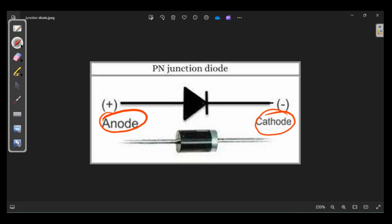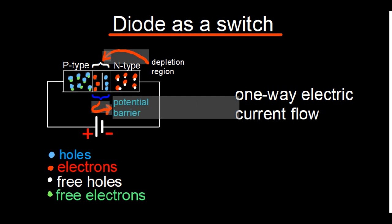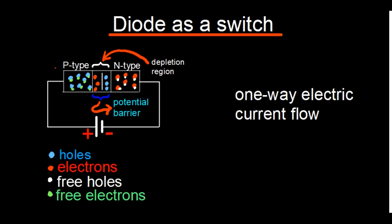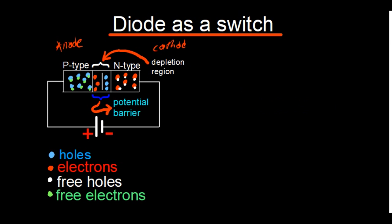One important thing about the diode is its working principle, which makes a lot of sense when we use this diagram. This positive side is where we have the P-type, and the other side is the N-type. It's more like we have the anode on one side and the cathode on the other. In the diagram, the blue ones are called holes, the big red dots are electrons, the white ones are free holes, and the green ones are free electrons. This diagram helps us understand the concept of forward bias and reverse bias of a diode.